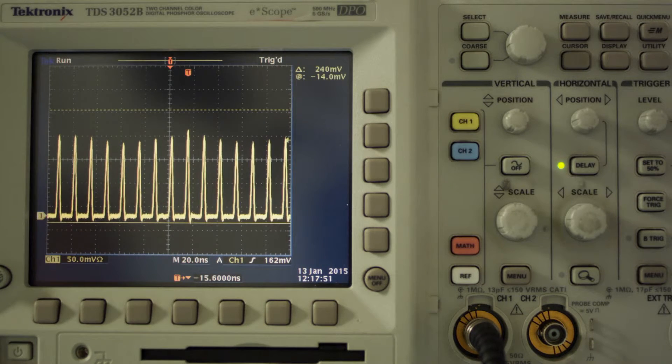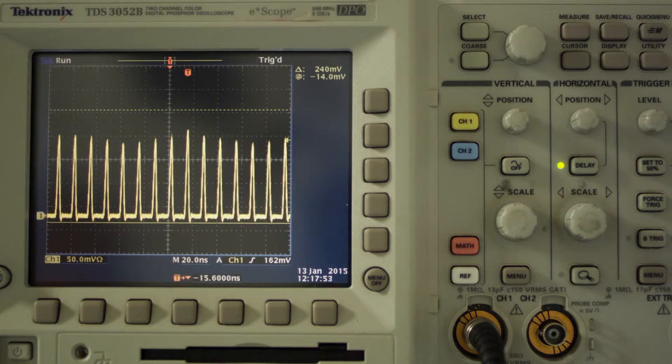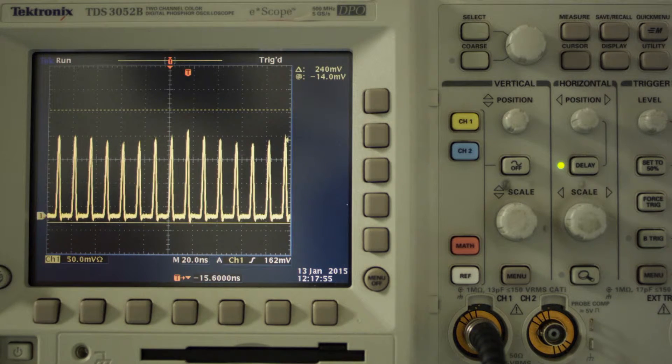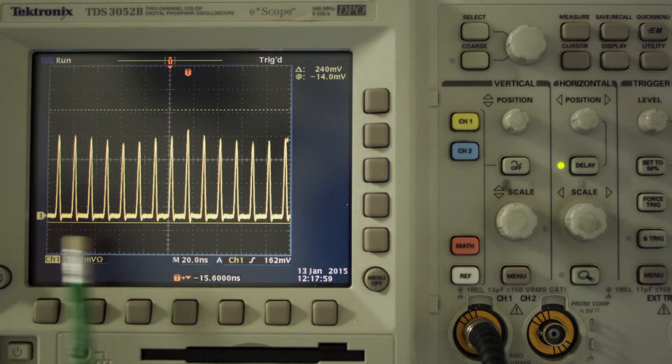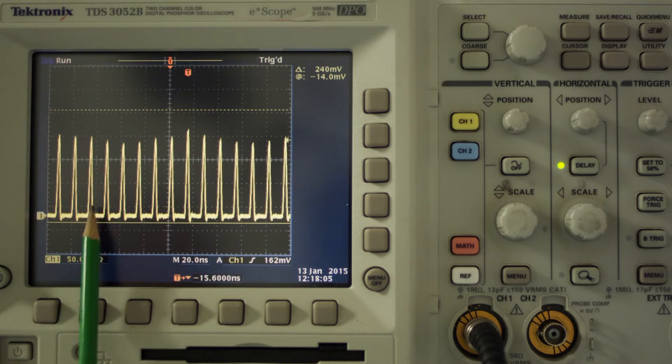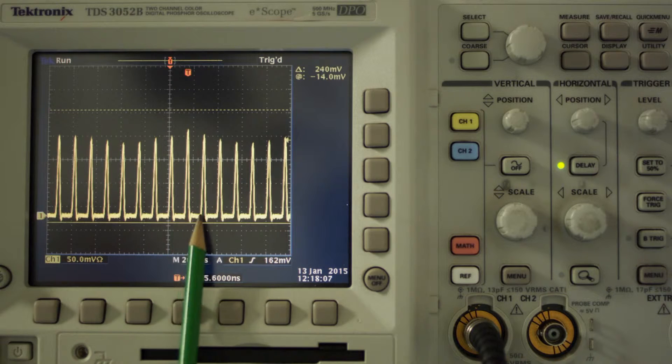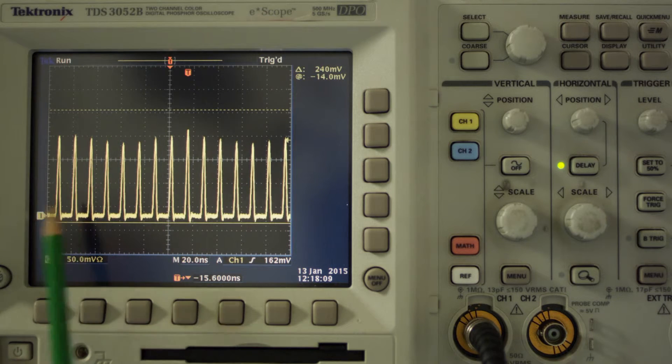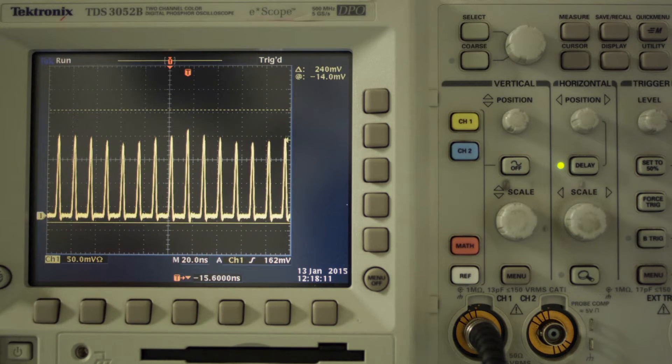So to give you a better idea what the beat signal is, you see here the photo diode signal on this oscilloscope. The time domain here is in nanoseconds and this is the oscillator pulse train. And the difference of these peaks is of the order of 10 nanoseconds. So the inverse of that is the repetition rate of the oscillator.